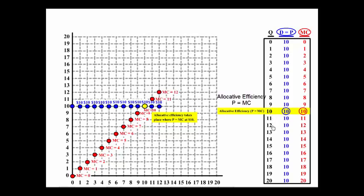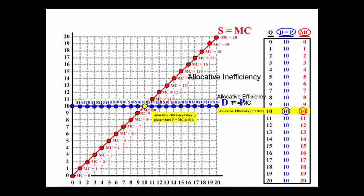Anywhere beyond that, though, we get into what's called allocative inefficiency. Allocative inefficiency is when the additional cost of producing that next unit is greater than the price that the consumer is willing to pay for that product.